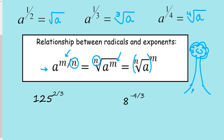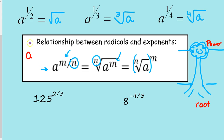Some people like to use a picture for this — here's a tree. The roots are below the surface and the powers are above, like a power line. So if you write a to the m over n as a fraction, the power m is above and the root n is below. That gives you a nice visual for remembering what goes where.